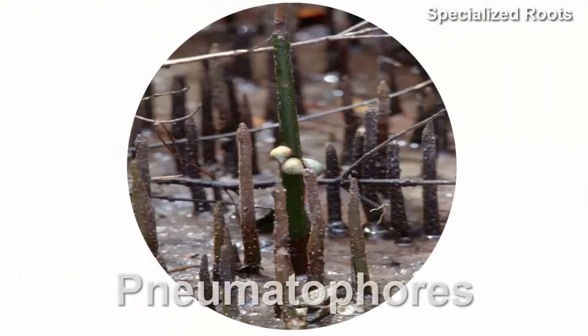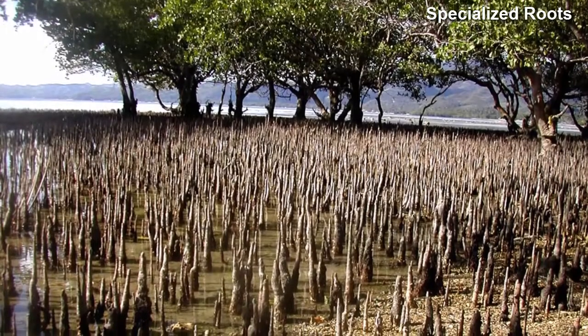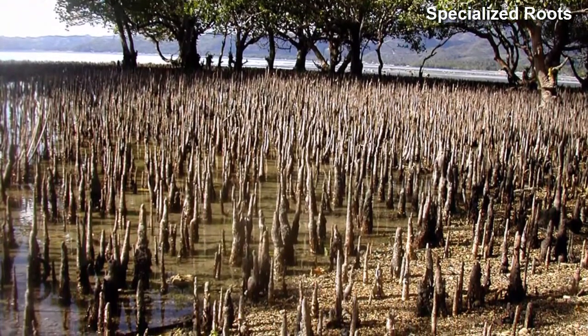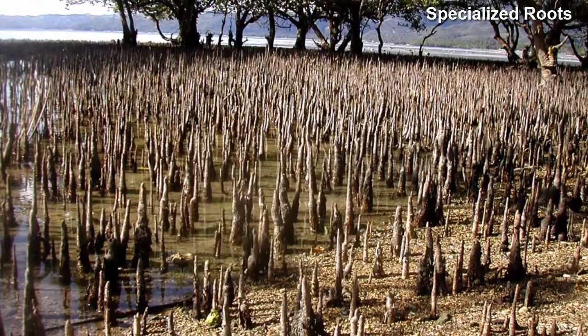Pneumatophores are common in mangrove trees and look like spongy outgrowths that allow gas exchange in the roots of plants that grow in wet areas with little dissolved oxygen. These usually extend above the surface of the water as if to siphon air from the environment.